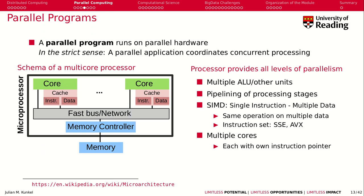A parallel program runs on whatever parallel hardware you have, and in the strict sense a parallel application coordinates concurrent processing. Here we see on the left side a schema of a multicore processor. We have a microprocessor with cores — quad-cores are quite common nowadays, or octa-cores with eight cores. This microprocessor is one physical chip that integrates all this logic inside.